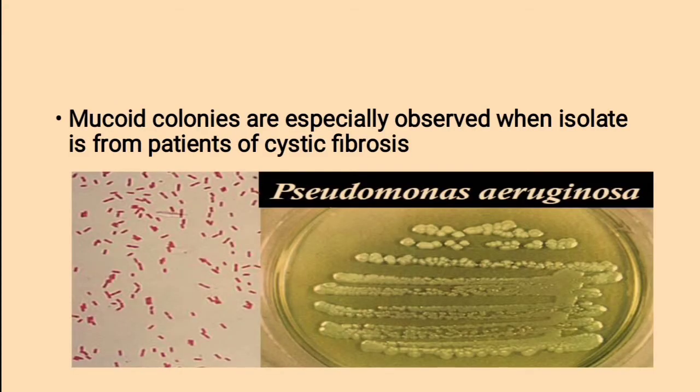Mucoid colonies are especially observed when the isolate is from patients with cystic fibrosis. Cystic fibrosis is a hereditary disease affecting the exocrine glands. It causes production of abnormally thick mucus leading to blockage of pancreatic ducts, intestine, and bronchi, often resulting in respiratory tract infection. This is the colony of Pseudomonas aeruginosa on nutrient agar, and this is the Gram stain picture of Pseudomonas aeruginosa.